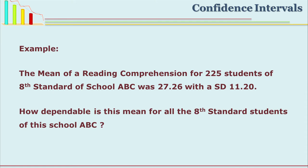Let us see with one example. The mean of a reading comprehension test for 225 students of standard 8 of school ABC was 27.26, and SD was 11.20. How dependable is this mean for all the standard 8 students of this school? The school has more than 800 students in standard 8 — that becomes the population. We are estimating by studying only 225 students. How dependable is this mean about all the students — the population? So we are estimating the population mean, called M-pop.